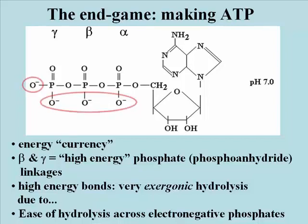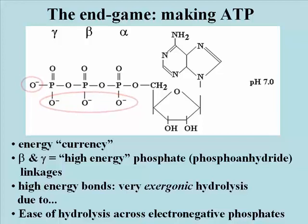The water addition is made easier because the phosphates are very electronegative, creating an effect of repulsion between the phosphates. The hydrolysis of the beta-gamma and of the alpha-beta phosphate linkages release considerable free energy that can be used to do different kinds of cellular work.